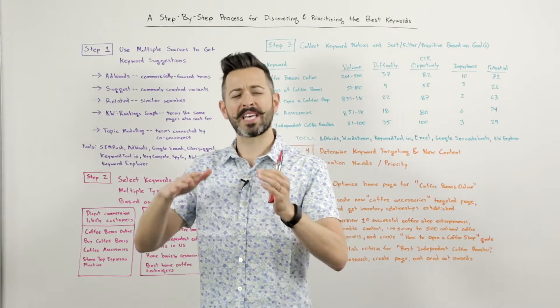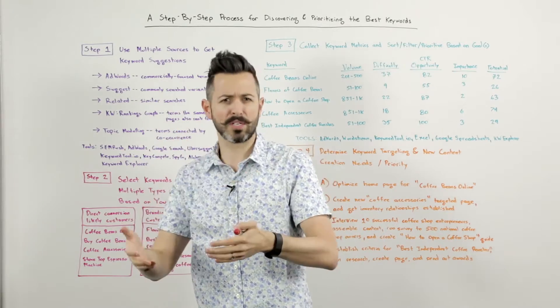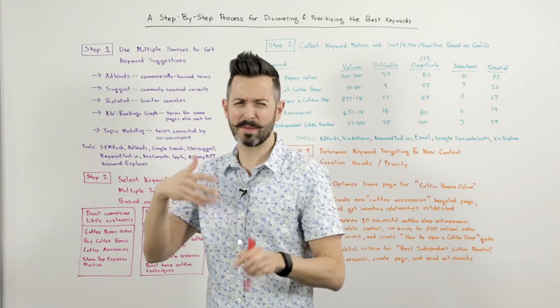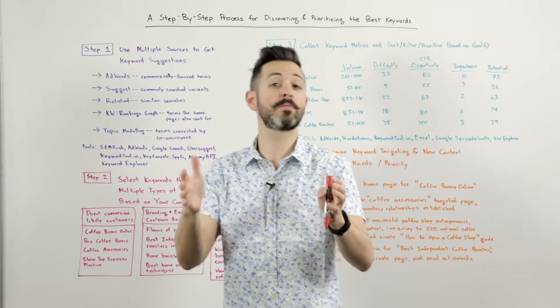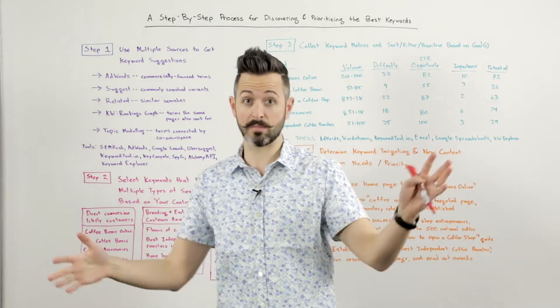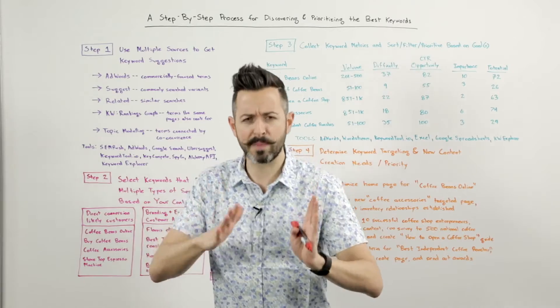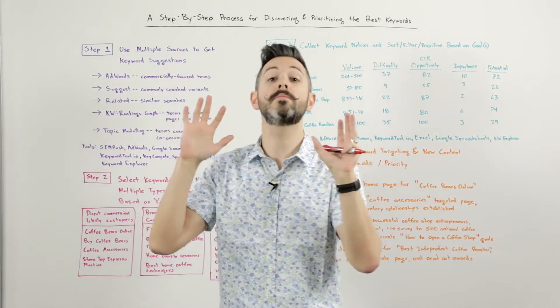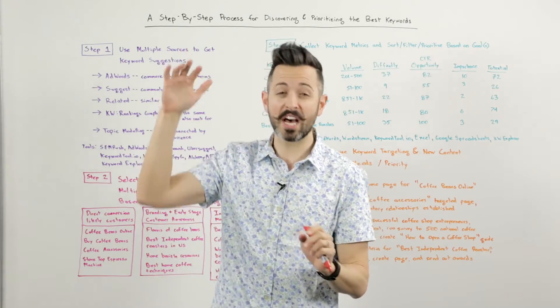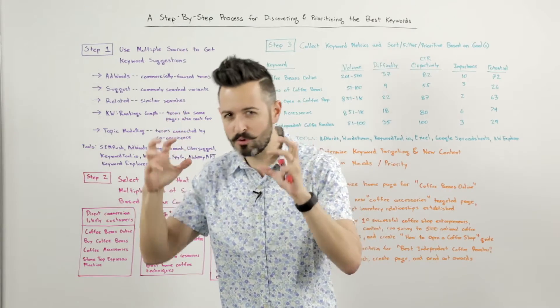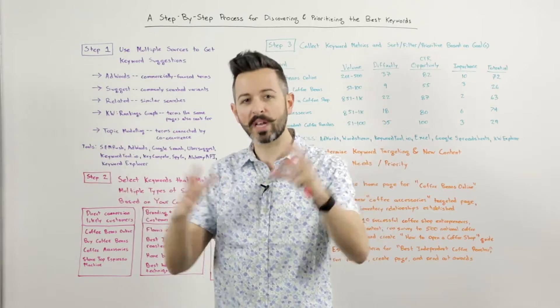The first thing that a lot of folks do is they only use a single source. They go to AdWords, for example, or maybe they'll go to Suggest, or possibly they'll start with SEMrush, which has an awesome corpus and database, but it's sort of based on a single source. My strong suggestion is a lot of the sources have only one type of data in them, and you want to combine them.